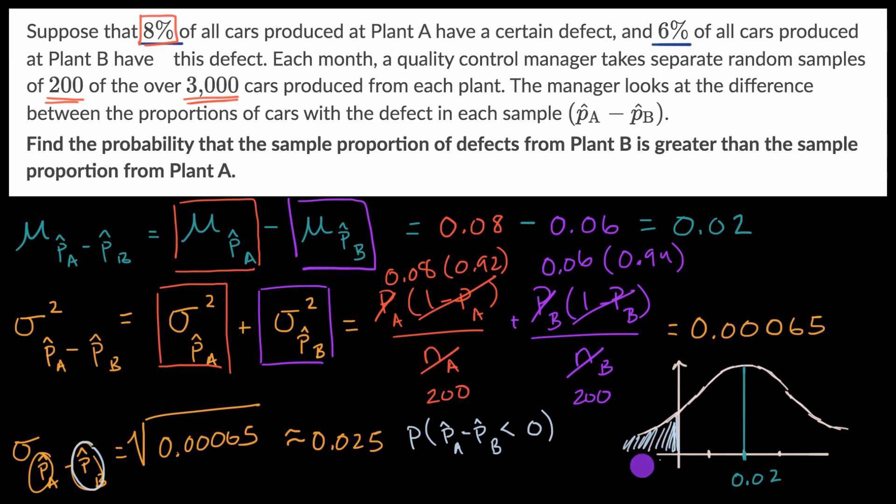And the Z value here, we just have to say, how many standard deviations below the mean is this? And I'll do it up here. Let me square this off so I don't make it too messy. Z is going to be equal to, so we are negative 0.02 from the mean, or we're at 0.02 to the left of the mean, so I'll just do negative 0.02, and then over the standard deviation, which is 0.025.